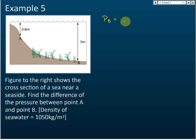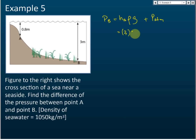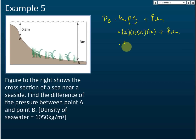The pressure at B: P_b equals h_B times density times g, plus atmospheric pressure P_atm. h_B is equal to 3, density is 1050, and g is 10. Using your calculator, you should get 31,500 plus the atmospheric pressure. So this is the pressure at B.